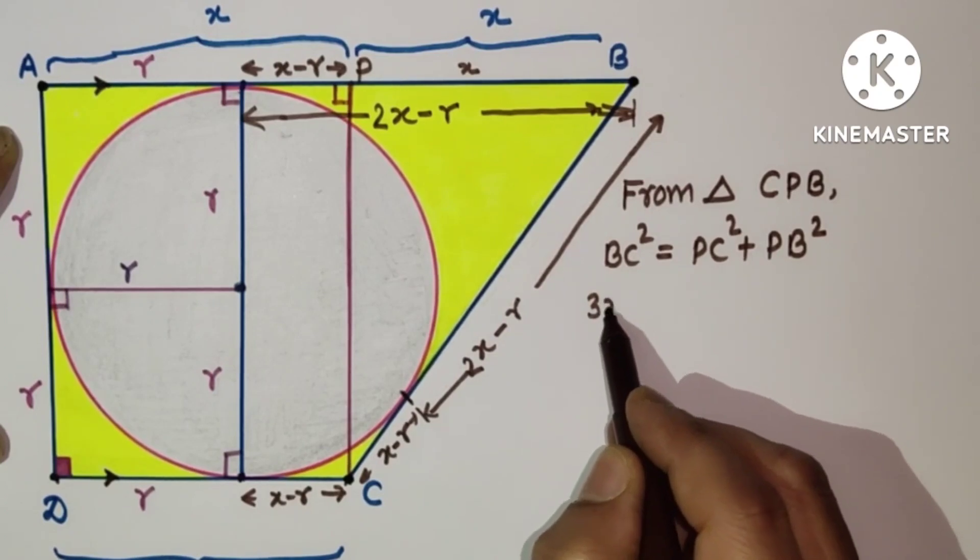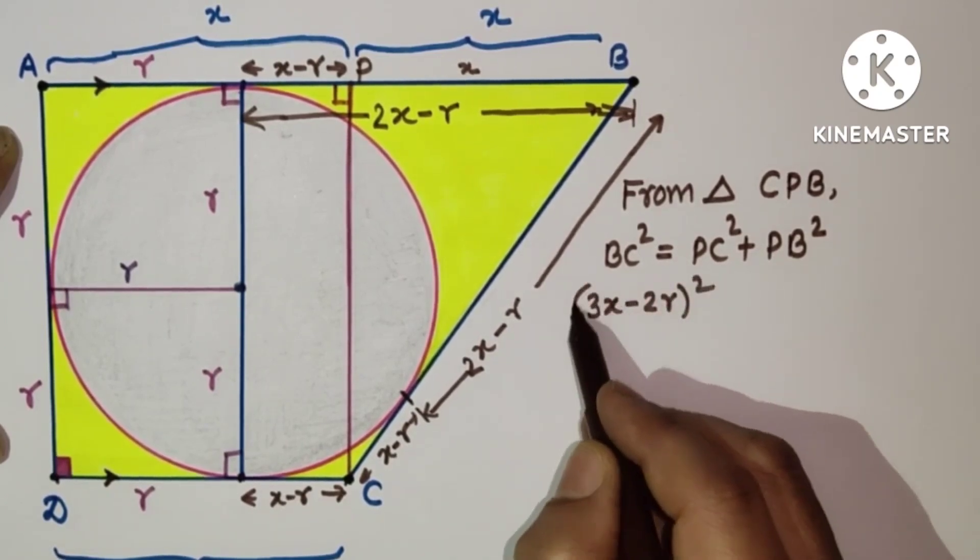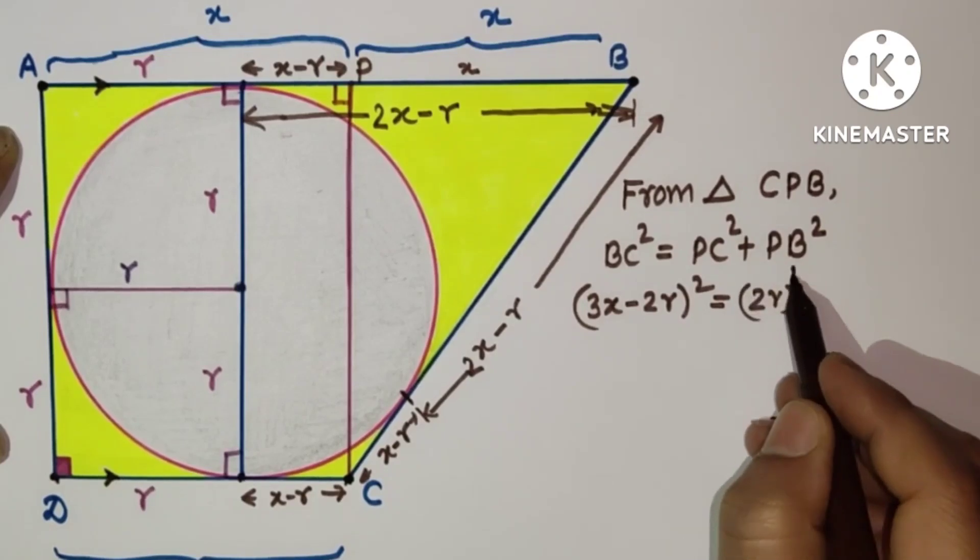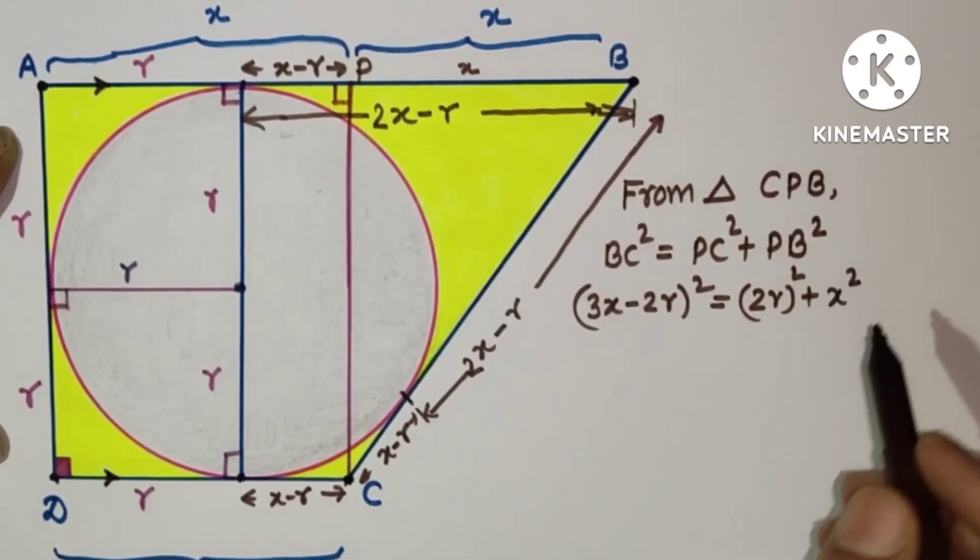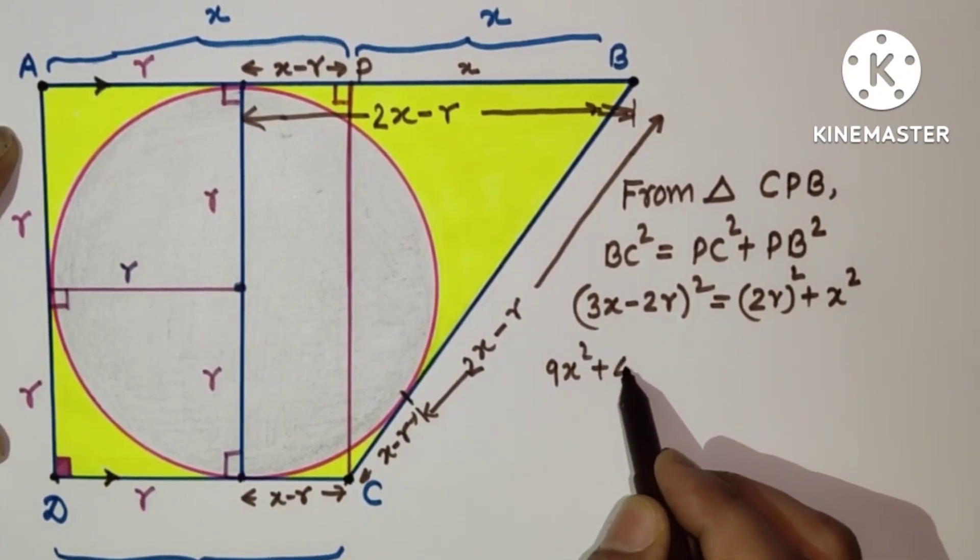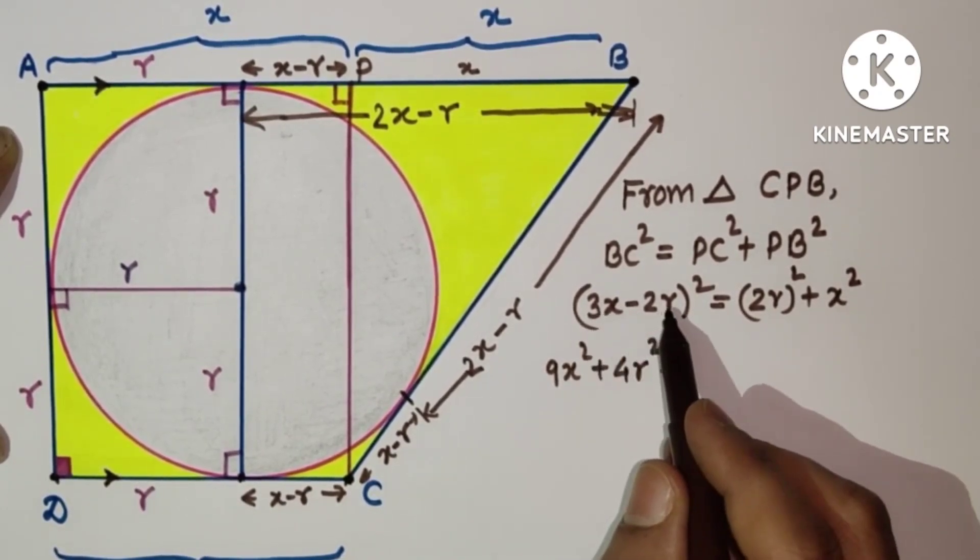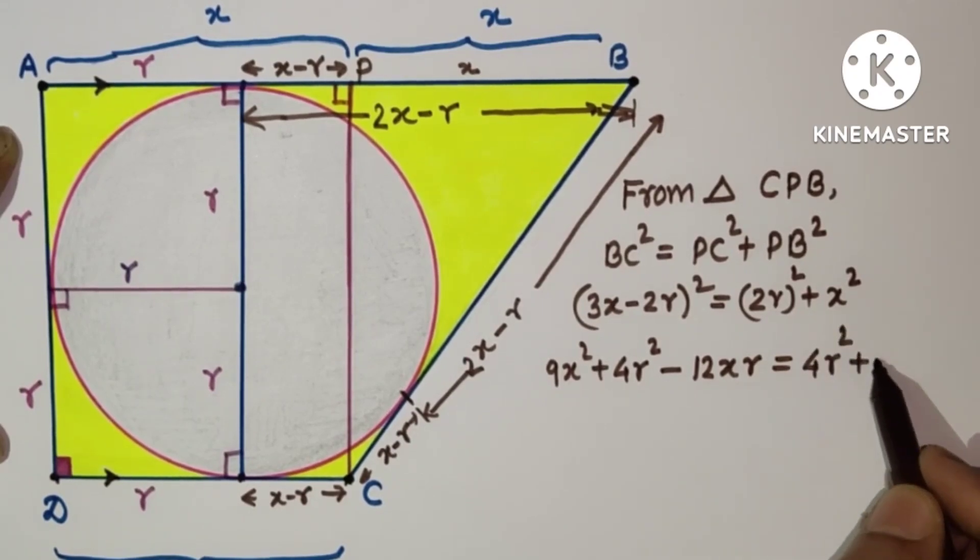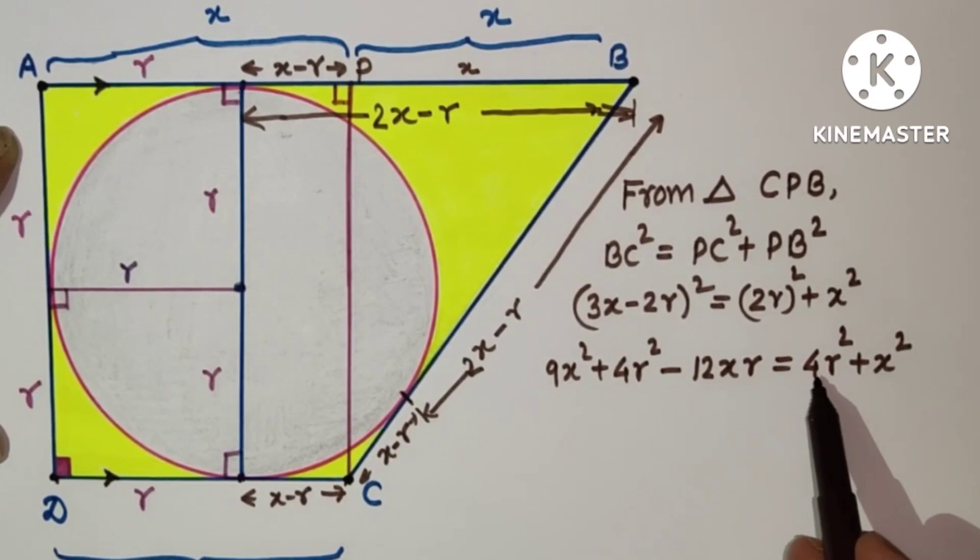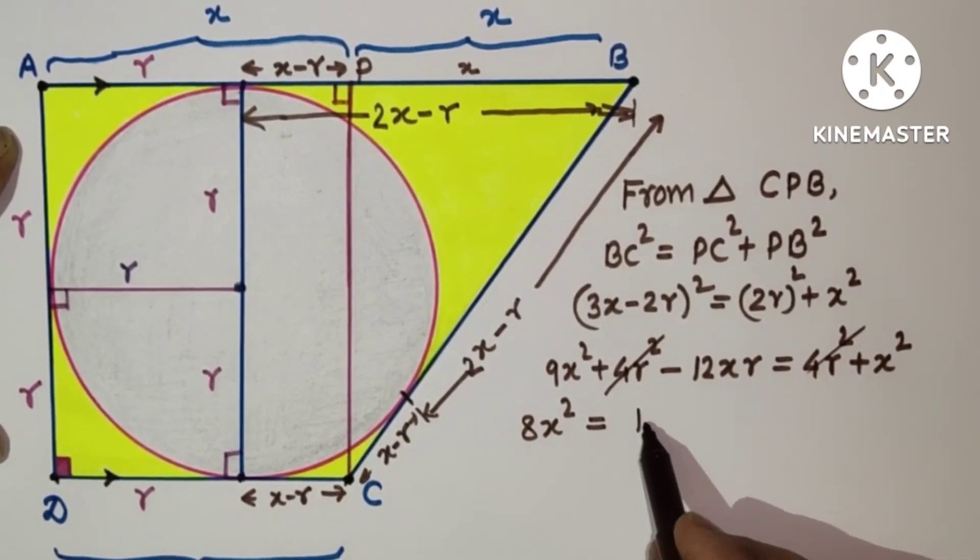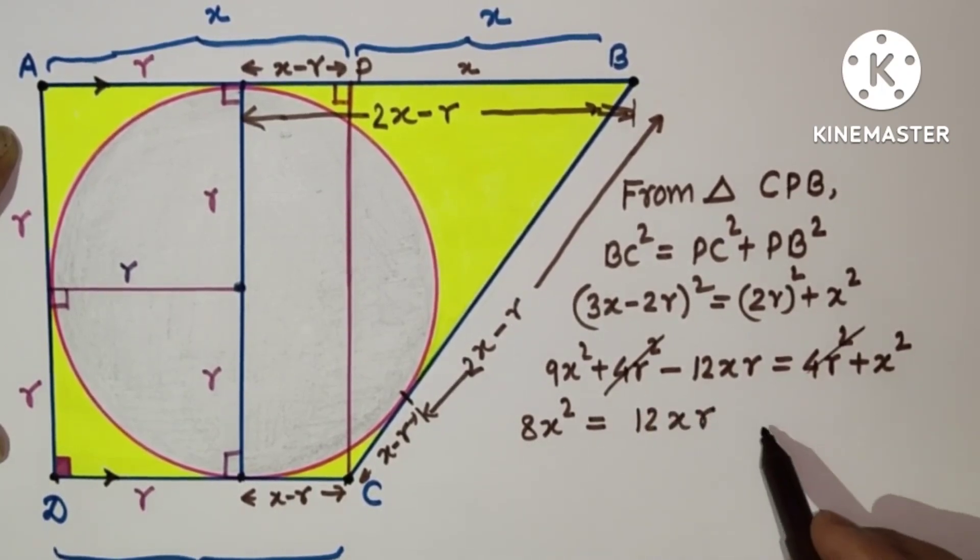This is 3X minus 2R, 3X minus 2R the whole square, is equal to PC, PC is 2R, plus PB is X. So after expansion we will get 9X square plus 4R square minus 2 into 3X into 2R into 2, that is 12XR, which is equal to 4R square plus X square. So these two 4R square will get cut. This X square will be subtracted from 9X square, so we are getting 8X square is equal to 12XR. So this is result number 1.